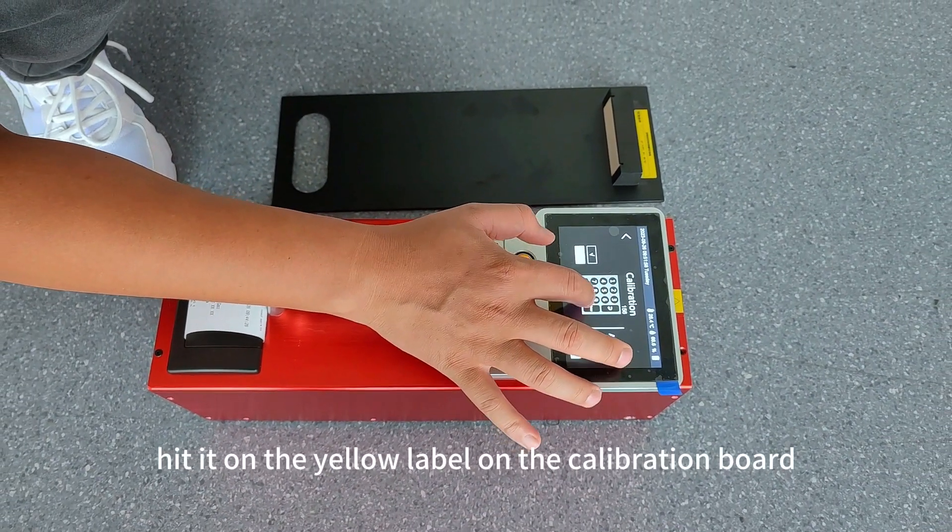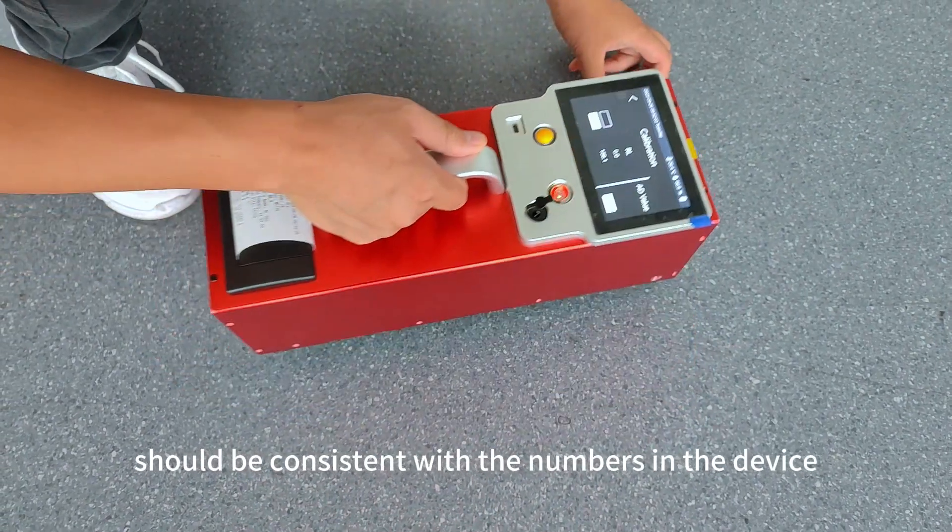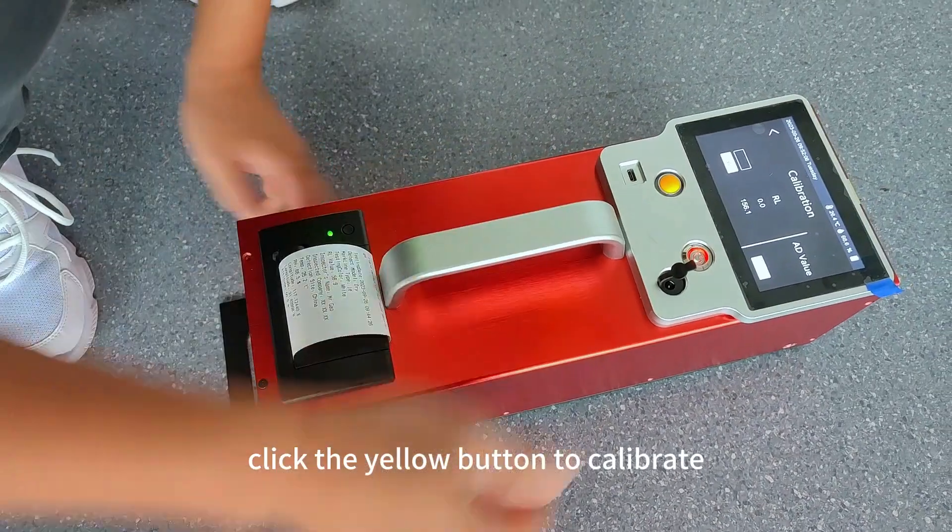The data on the yellow label on the calibration board should be consistent with the numbers in the device. Click the yellow button to calibrate.